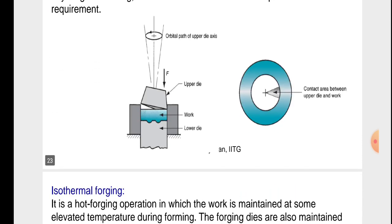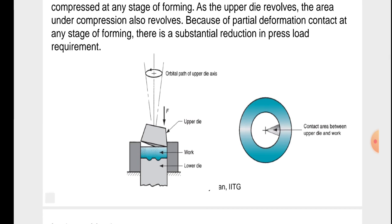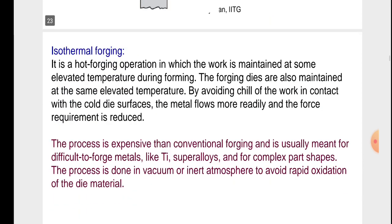In the figure, the orbital path of the upper die axis is shown. The upper die force, quantity of work, and workpiece are indicated. The lower die is shown, along with the side view and the contact area between the upper die and work.